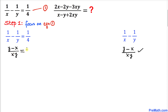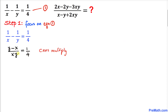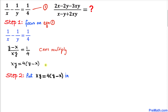We can replace the left hand side with y minus x divided by xy equals 1 over 4. The next step is to cross multiply, giving us xy equals 4 times y minus x.